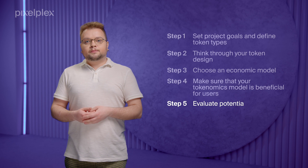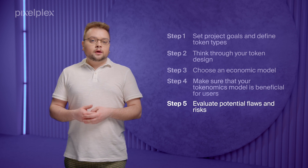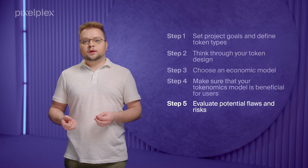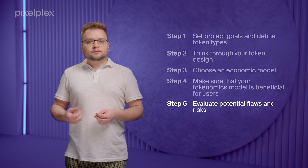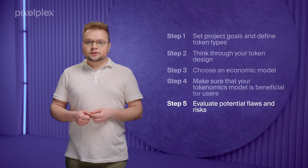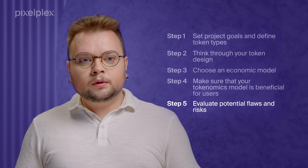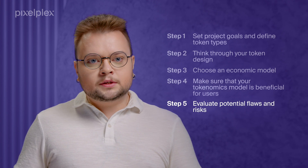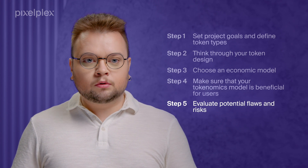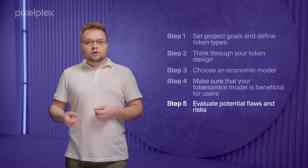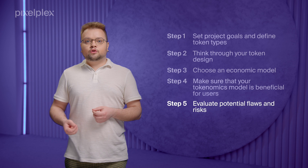Step 5: evaluate potential flaws and risks. You will need to analyze every aspect of your project's token economy and see if there are any small or big flaws that can be fixed or improved. For example, you will need to check if there are any security issues. If there is a chance that tokens can be stolen, it will ruin the reputation of your project. So audit your smart contracts and make sure they don't have bugs and vulnerabilities.